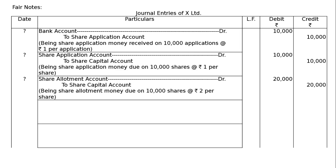Next entries: allotment due, then allotment received. Share Allotment Account debited to Share Capital Account. Being share allotment money due on 10,000 shares at the rate of Rs 2 per share. That is 10,000 × 2 = Rs 20,000 as the due entry for allotment.